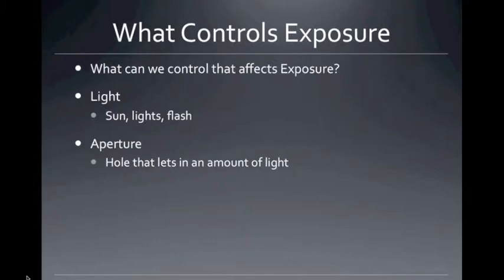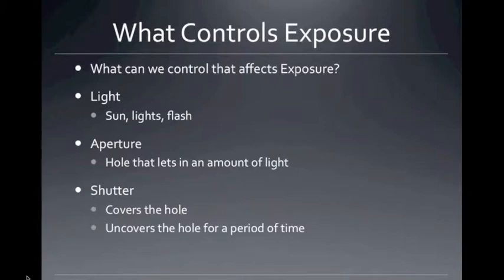We can also change the size of the aperture, which is the hole that lets in an amount of light. A bigger hole is going to be more exposure, and a smaller hole is less exposure. We can also control the shutter. The shutter covers the hole and uncovers it for a period of time. If it goes longer, there's more light that gets let in for a brighter exposure, and shorter means less light.